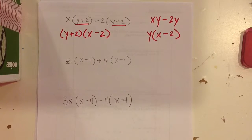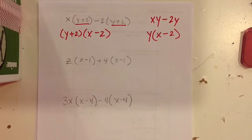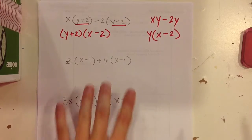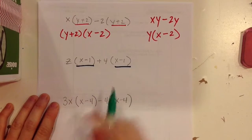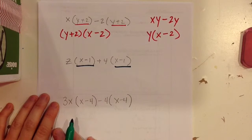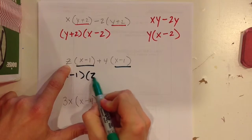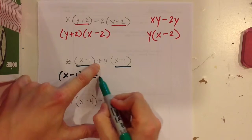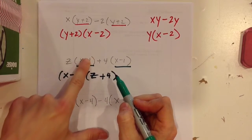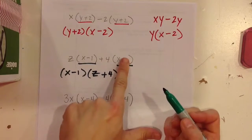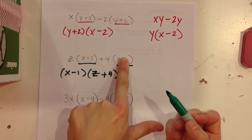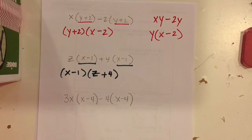A lot of people, that blows their mind the first time — that's why we have three examples. Let's look at the next problem and see what the GCF is. The (x − 1) is what they have in common. If I take out (x − 1) as my GCF, I'm left with z plus 4, because (x − 1) cancels with the first term and (x − 1) cancels with the second term, leaving just 4. That's factoring using GCF.